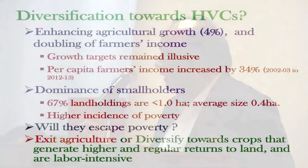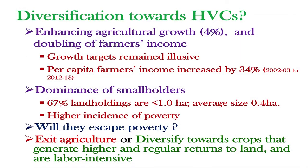Let me come to the crux of my presentation: diversification towards high value crops. The share of horticultural crops in gross crop area has increased over three decades, and they now account for about one third of the value of agricultural output. Using a simple growth accounting approach, I find that since 2000, the high value crops and horticulture sector have emerged as a more important driver of agricultural growth in the country.